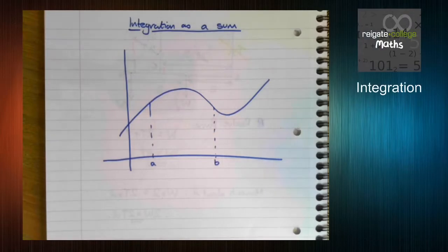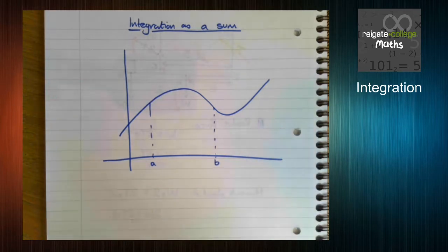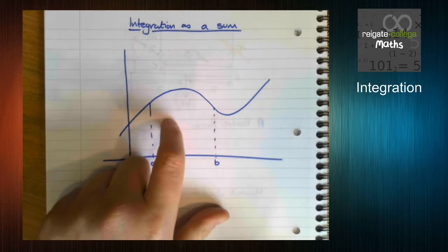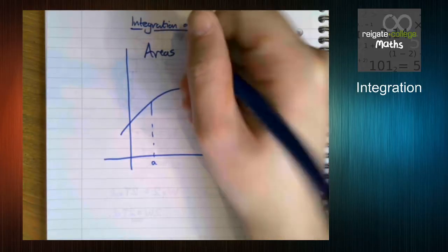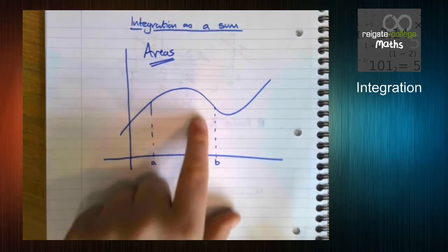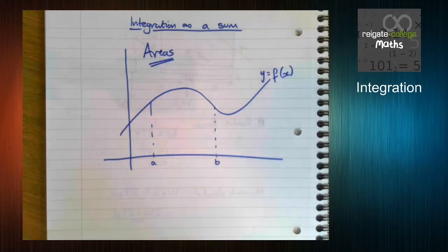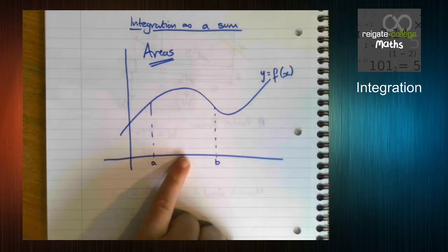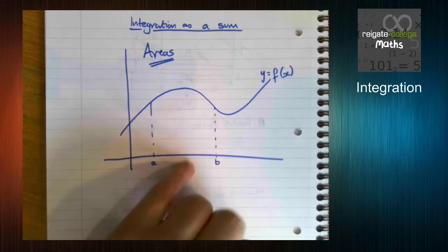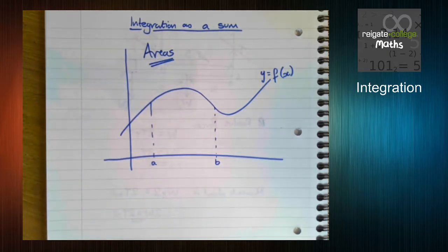So the key thing to think about with this is what's the point of integration, or what's one of the reasons we integrate? Well, it's to find areas. So if we have this area here, we want to find the area but maybe we don't know what this function is. Maybe we can't integrate it. So we need to find another way to find this area or an approximate way to find this area.